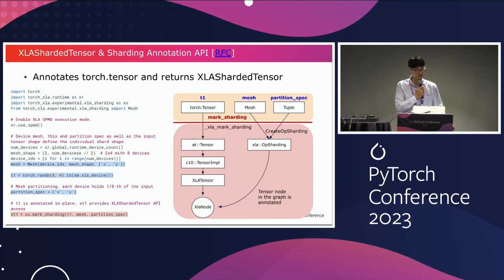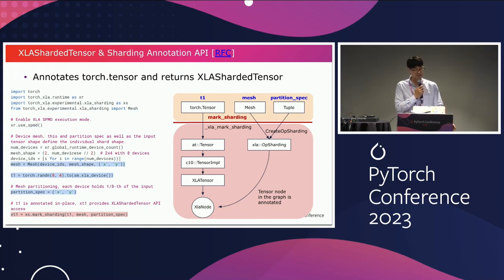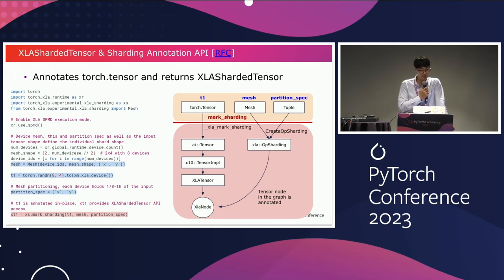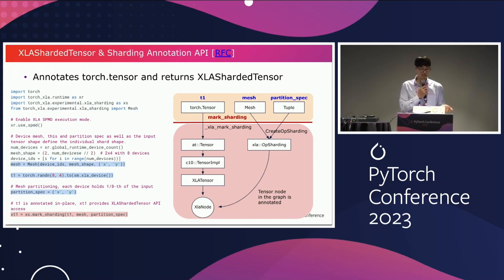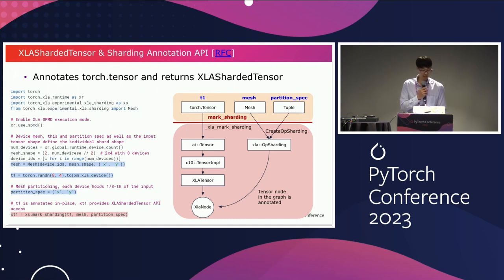I'll explain more about mesh and partition spec in the next slide. When the mark_sharding API is called, we construct an XLA op-sharding proto, which is a sharding annotation input for the XLA compiler, and attach that to the XLA graph node linked to the input tensor. Eventually that gets transformed into HLO and compiled into a partitioned program to be executed.